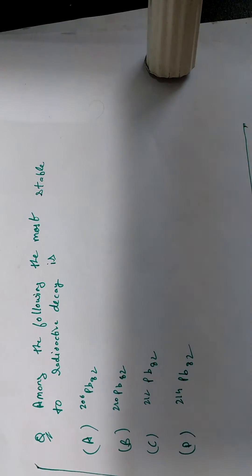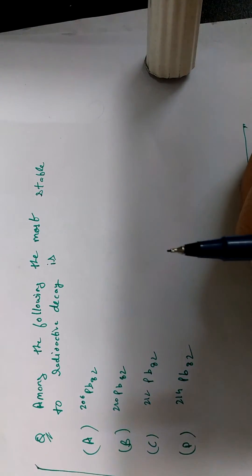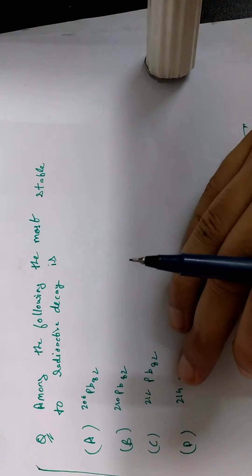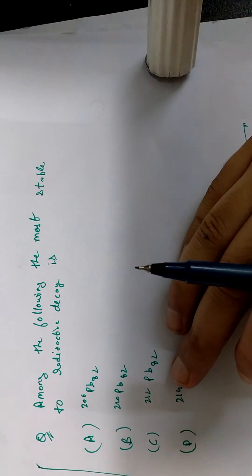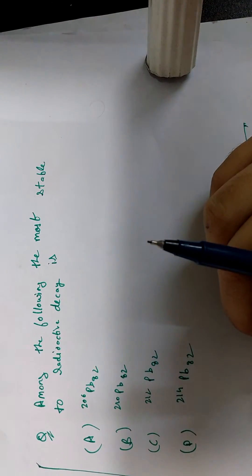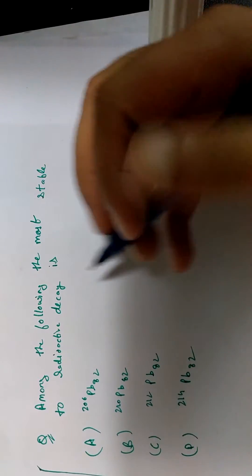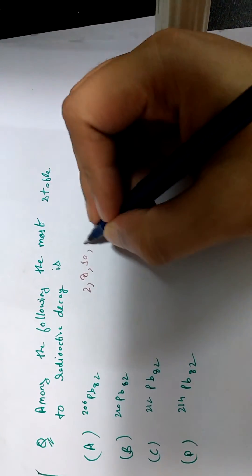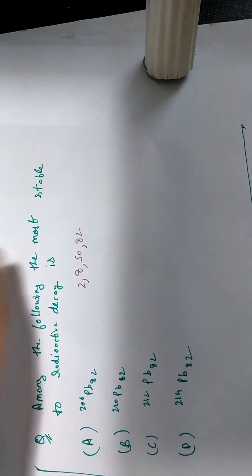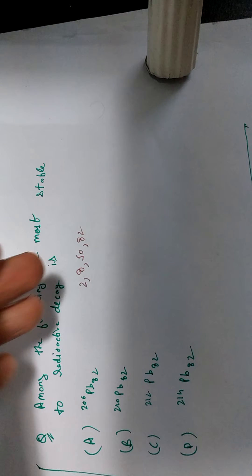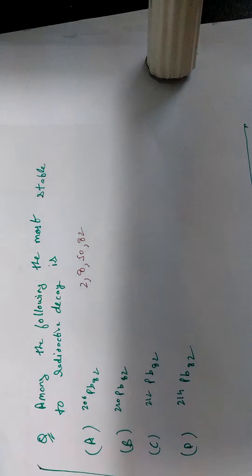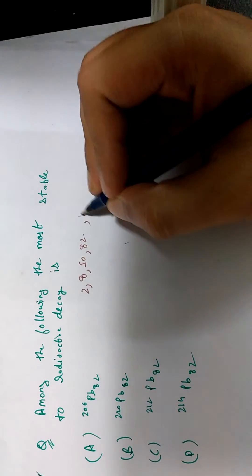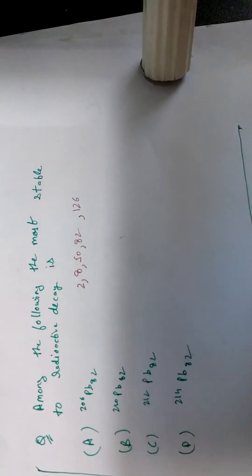Now for stability of the nucleus, you need to know the nuclear shell model. And according to the nuclear shell model, there are certain numbers called as magic numbers for which the nucleus is very stable. So these numbers are for example 2, 8, 50, 82. So if the both, if the number of neutrons and the number of protons are both occupying these numbers, then there is one more actually 126.